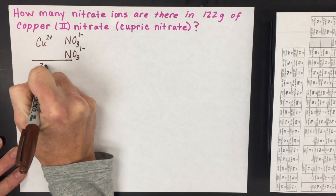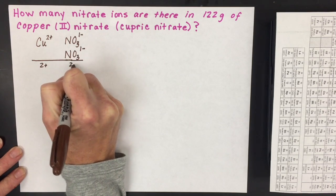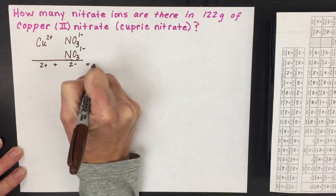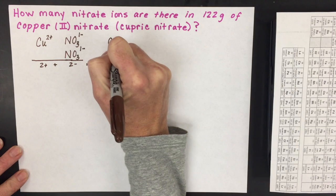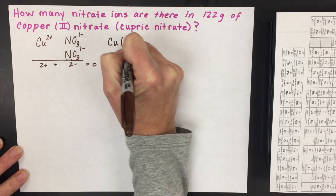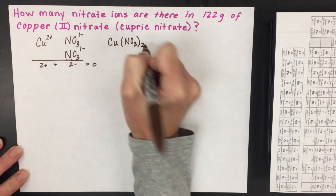the positive charge of 2+ adds up to the negative charge and equals zero. So when we write copper (II) nitrate or cupric nitrate, it's Cu(NO3)2.